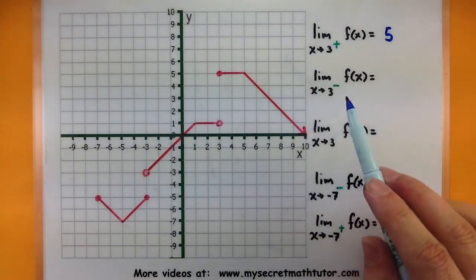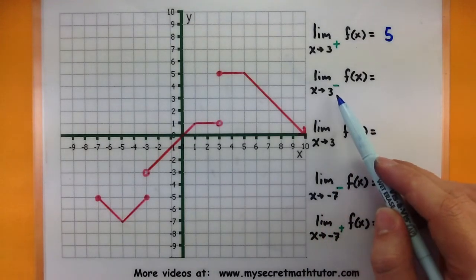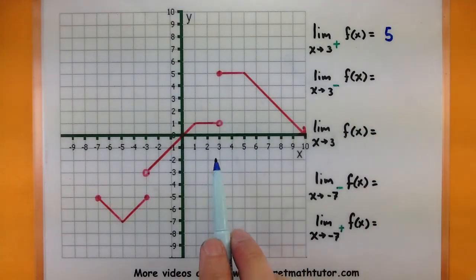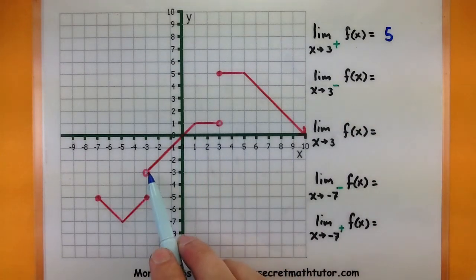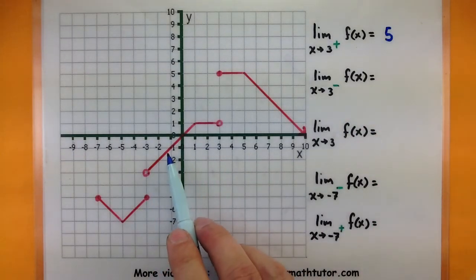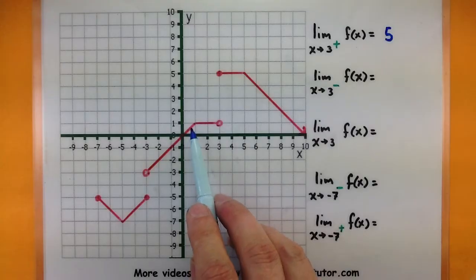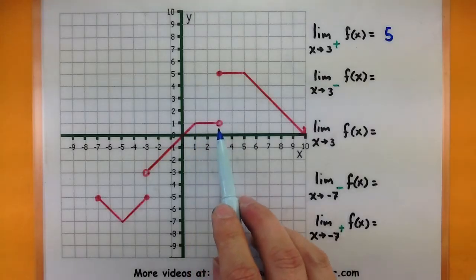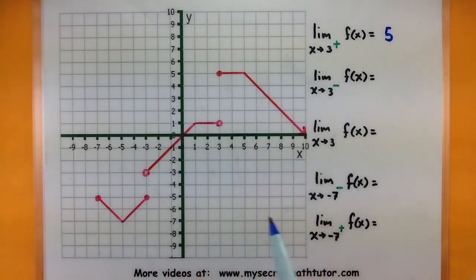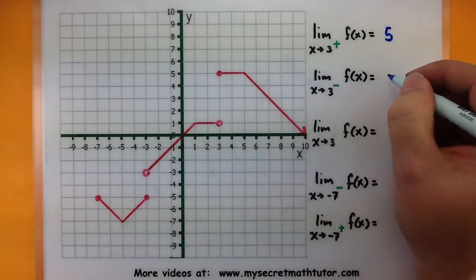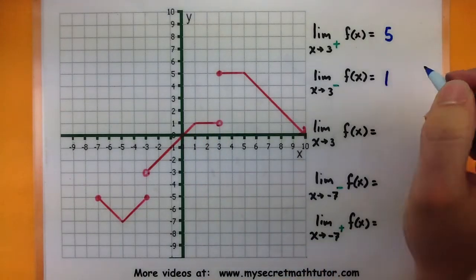We'll do a very similar one — we'll also approach 3 from the left side. There's our value again. Now following along this arm of the function, we can see that the y value wants to be 1.